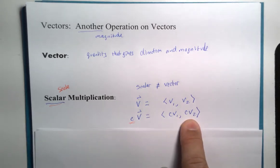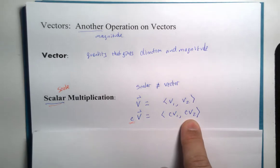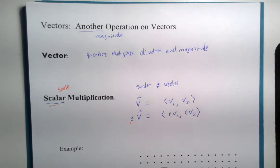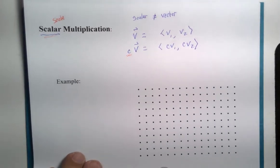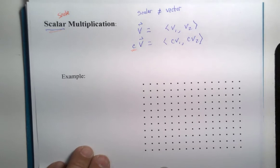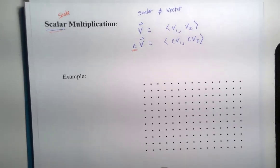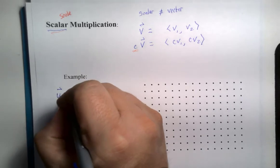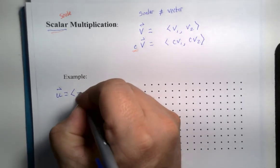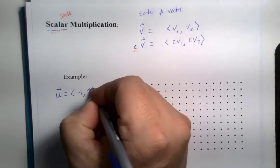So let's look at an example just to show you how simple it is. So let's suppose we have a vector. Here we'll call it u. And it's the vector negative one comma two.